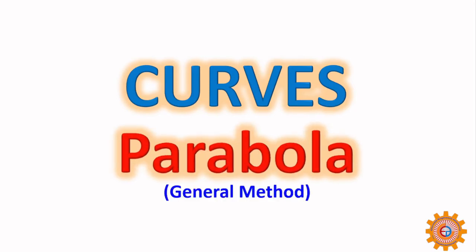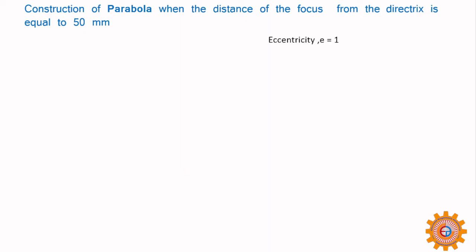We particularly focus on the general method to construct the parabola when the distance of the focus from the directrix is equal to 50 mm. In parabola, the eccentricity is 1. I will explain what is eccentricity and why it is equal to 1.